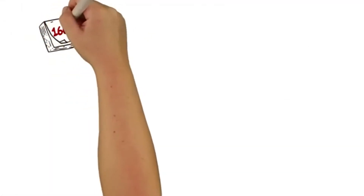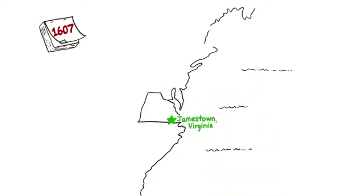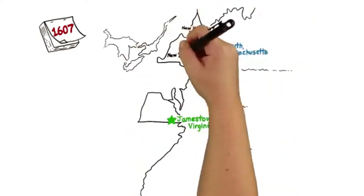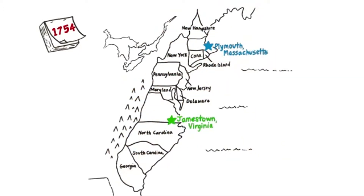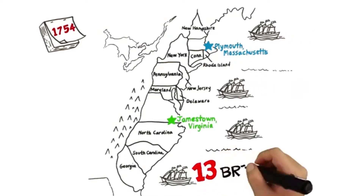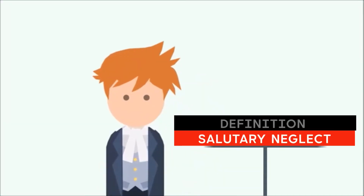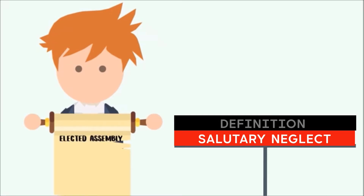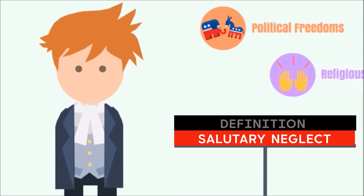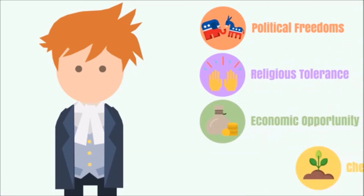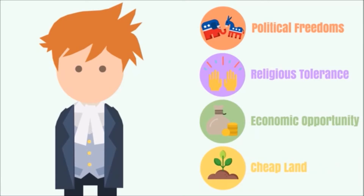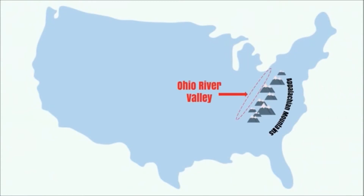It all started back in 1607 with the first successful English settlement — Jamestown, Virginia — soon followed by Plymouth, Massachusetts. Over the next 130 years, cities developed, and in 1754 the entire East Coast was established as the 13 British colonies. Around the 1750s, England and the colonies were doing pretty well. England gave the colonies free range to solve their own problems. Many had established their own Parliament-esque governments and passed their own laws on taxes. These political freedoms, coupled with religious tolerance, economic opportunity, and cheap land, made moving to the colonies attractive — so much so that colonists wanted to settle further west, specifically in the Ohio River Valley. Which would have been great, if someone wasn't already there.